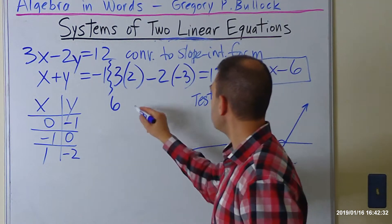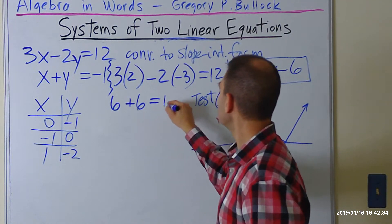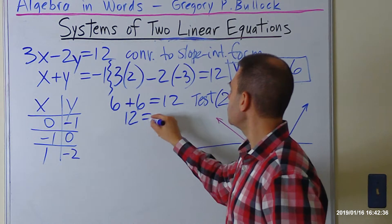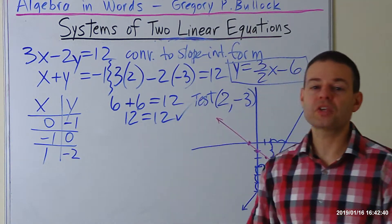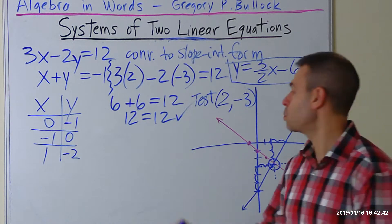Negative 3 is positive 6, and notice we get 12 equals 12, the left side equals the right side. Let's put a check next to that and move to the next one.